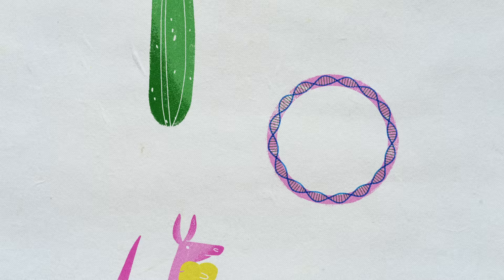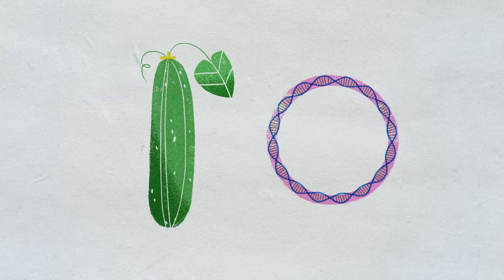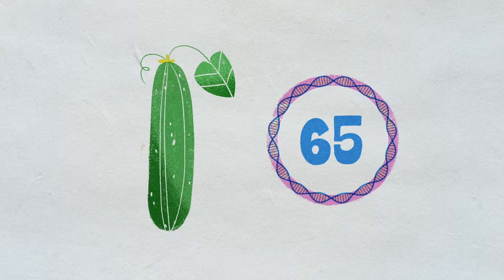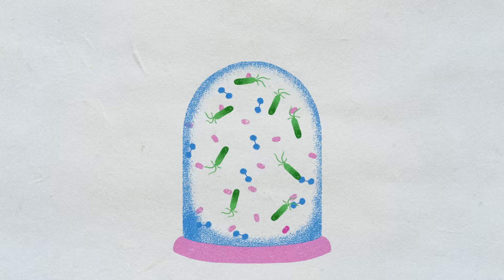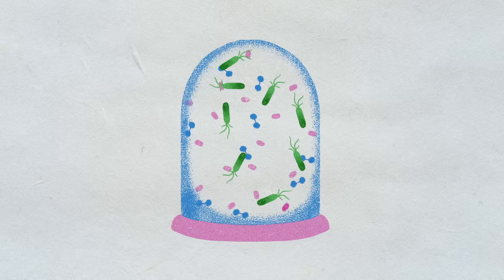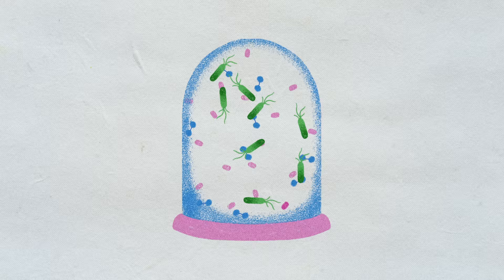In some plants, like cucumbers, mitochondria have up to 65 genes, and some fungal mitochondria have only one. A few microbes that live in oxygen-poor environments seem to be on the way to losing their mitochondria entirely.